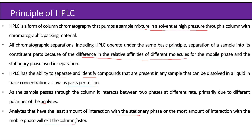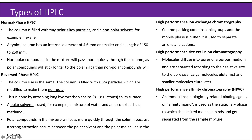Types of HPLC. First is normal phase HPLC, where the column is filled with tiny polar silica particles and a non-polar solvent, for example hexane. A typical column has an internal diameter of 4.6 mm or smaller and a length of 150–250 mm. Non-polar compounds in the mixture will pass more quickly through the column, as polar compounds will stick longer to the polar silica than non-polar compounds will.